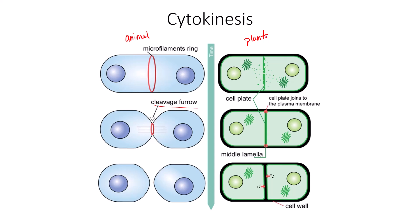In plant cells, there is a rigid cell wall which cannot be contracted or pinched in the middle. Instead, vesicles secreted by the Golgi apparatus contain cellulose and are sent to the cell plate, which forms in the middle where the new cell wall will be made. As those vesicles secrete cellulose-based components into the cell plate, it forms the new cell wall, eventually completing the division of the cytoplasm — cytokinesis in plant cells.